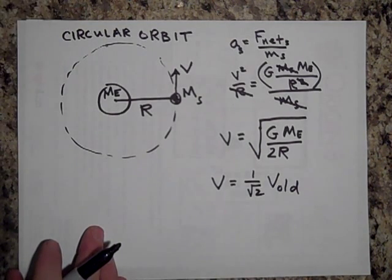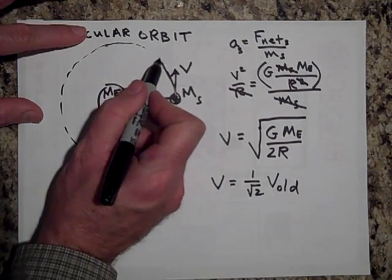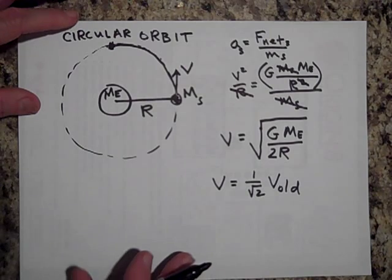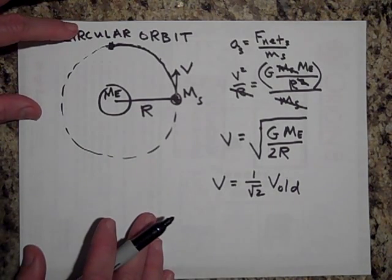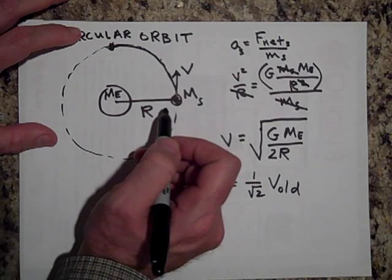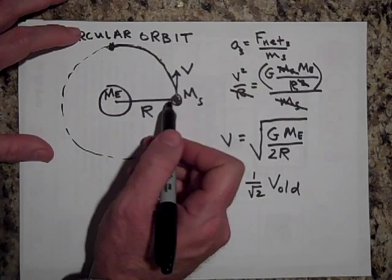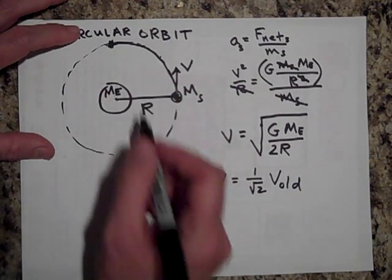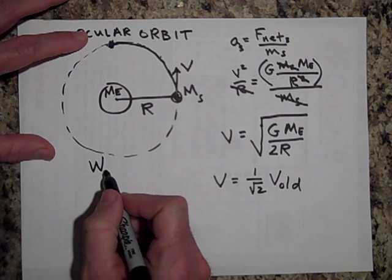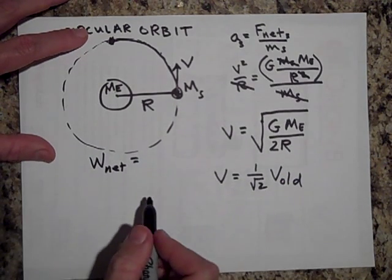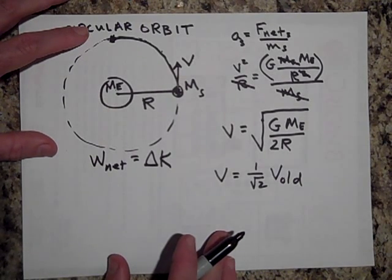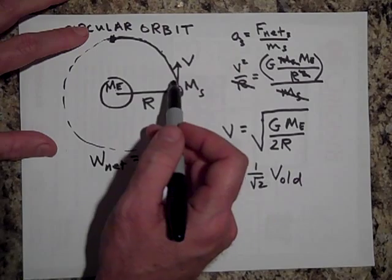After one quarter of the way around — when the satellite gets to that point — how much work is done by the force of gravity? Go ahead and pause. The answer is zero. The force of gravity is the only force on the satellite, and since kinetic energy doesn't change in a circular orbit, the work done by the net force — gravity — equals the change in kinetic energy, which is zero.